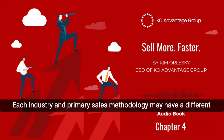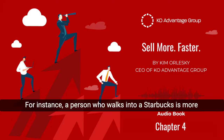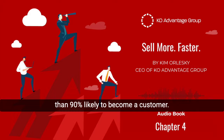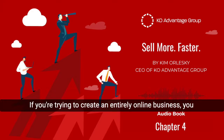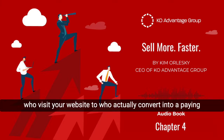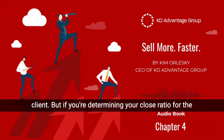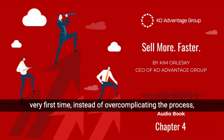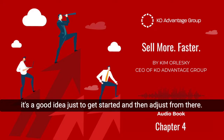Each industry and primary sales methodology may have a different close ratio. For instance, a person who walks into a Starbucks is more than 90% likely to become a customer. If you're trying to create an entirely online business, you will have closer to a 2% close ratio for the number of people who visit your website to who actually convert into a paying client. But if you're determining your close ratio for the very first time, instead of over-complicating the process, it's a good idea just to get started and then adjust from there.